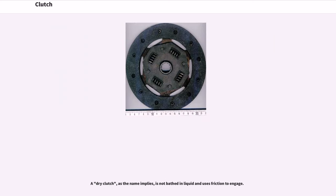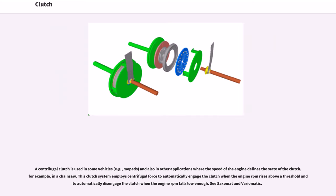A dry clutch, as the name implies, is not bathed in liquid and uses friction to engage. A centrifugal clutch is used in some vehicles, for example mopeds, and in other applications where the engine speed defines the state of the clutch — for example, in a chainsaw. This clutch system employs centrifugal force to automatically engage when the engine RPM rises above a threshold and to automatically disengage when the engine RPM falls low enough.